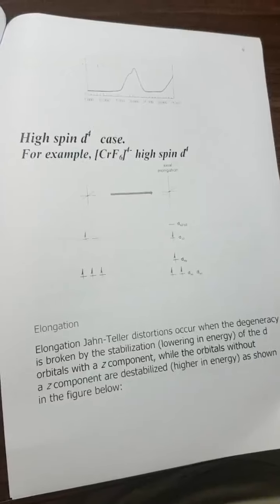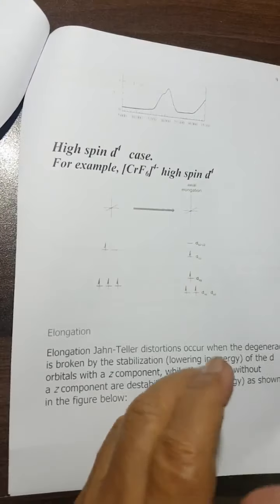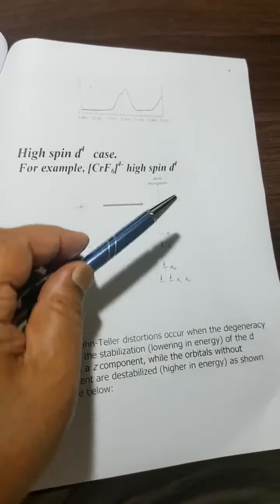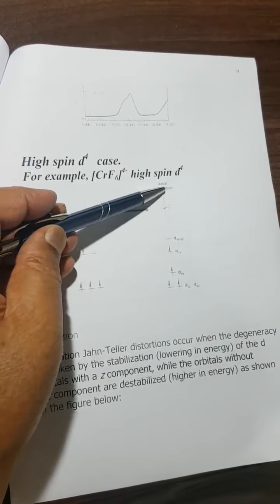Elongation means that one bond distance is longer, as shown here. This distance is longer than the equatorial one.